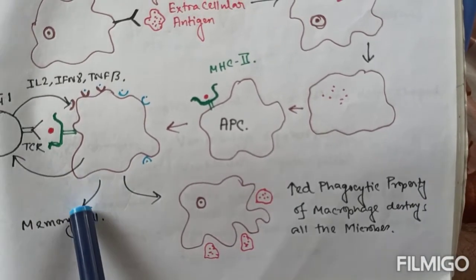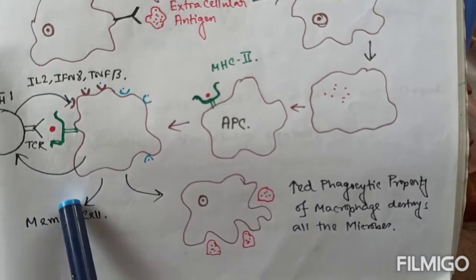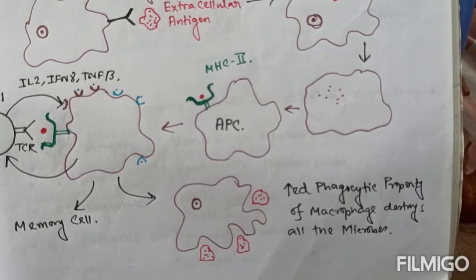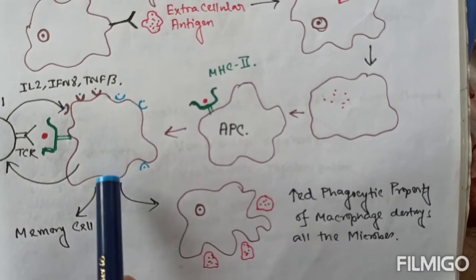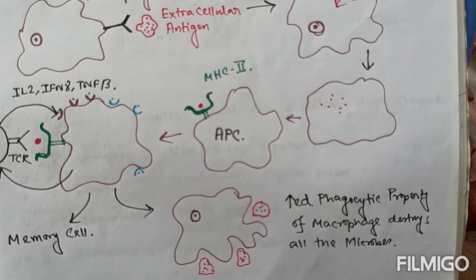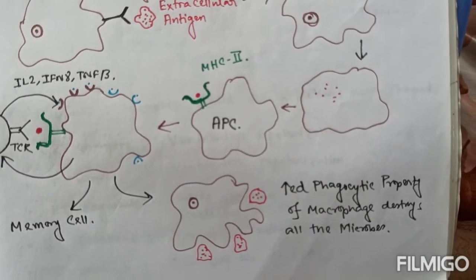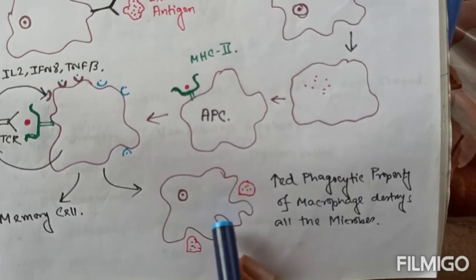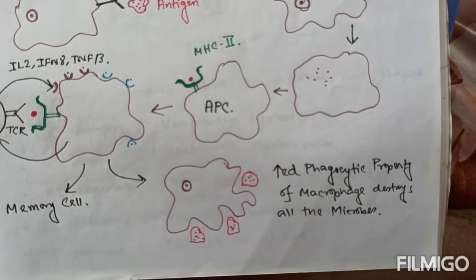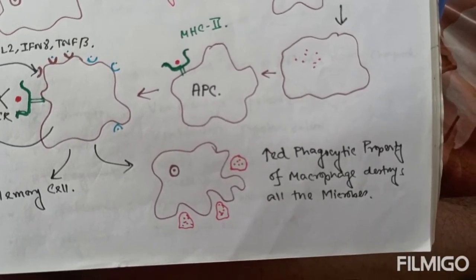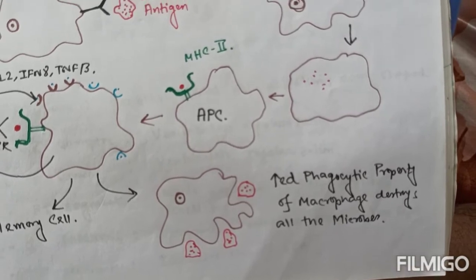So some of the macrophages act as memory cell for future recognition of the same antigens and others are converted into more active or more phagocytic form. And they can easily destroy or remove the remaining antigens present in the blood.